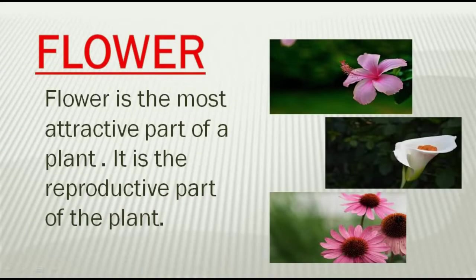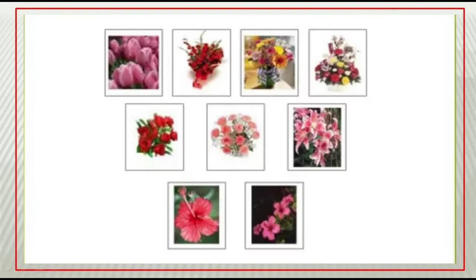You all have seen many flowers. They are the most attractive part of a plant, found in different colors and shapes. That is why it is called the most attractive part of a plant. And this flower only forms fruits later on, and in fruits they have seeds, and from seeds new plants grow. That is why it is also called the reproductive part of the plant, as it helps in producing new plants.